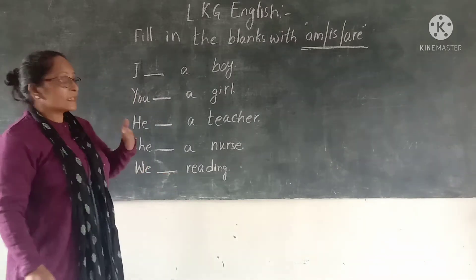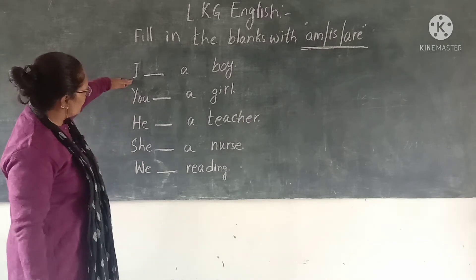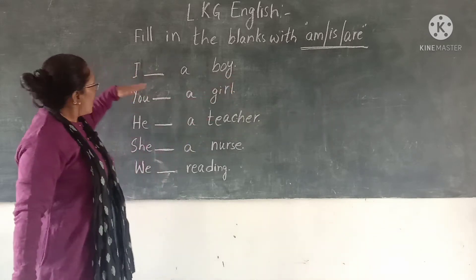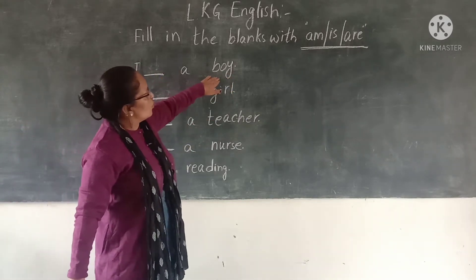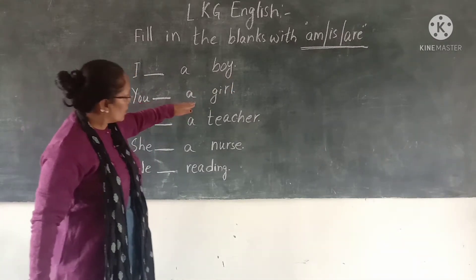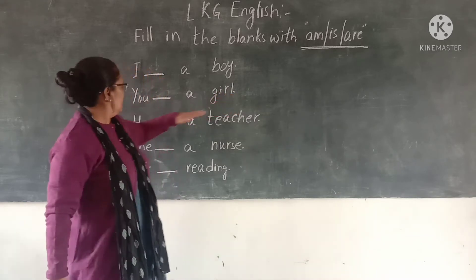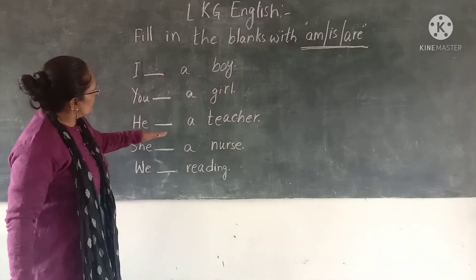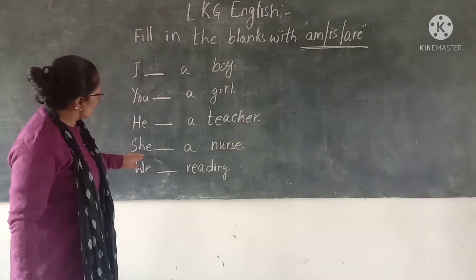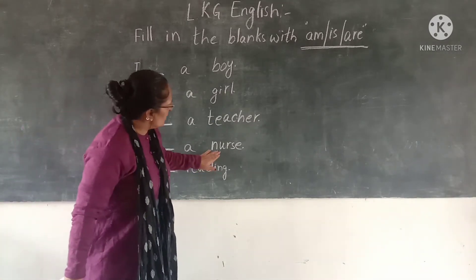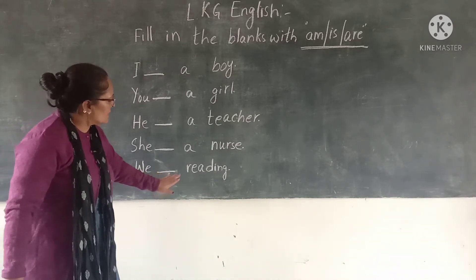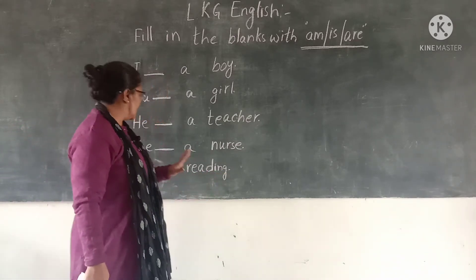Let us read the sentences first. I blank a BOY. YOU blank a GIRL. HE blank a TEACHER. SHE blank a NURSE. WE blank READING.